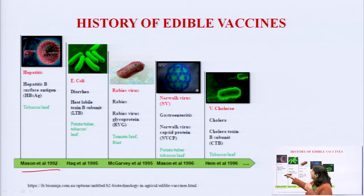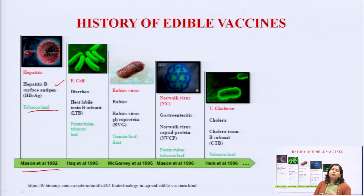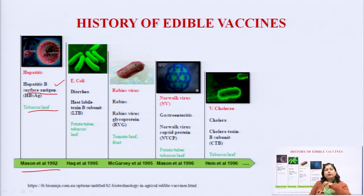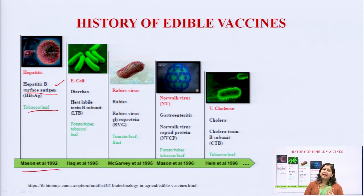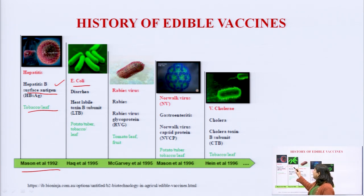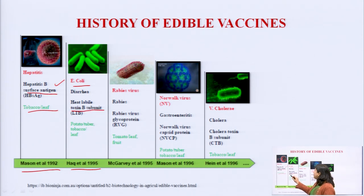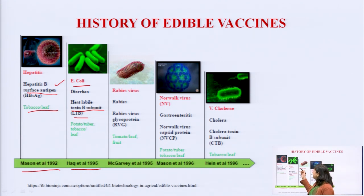There are a few important developments. Mason in 1992 developed the hepatitis B vaccine in tobacco leaf - he was able to induce the hepatitis B surface antigen protein on the tobacco leaf, so a person eating that tobacco leaf gets the hepatitis B protein inside and it acts as a hepatitis vaccine. Then Huck et al. in 1995 used the toxin B subunit, known as the LTB subunit of E. coli, and was able to transfer that unit inside the potato tuber as well as tobacco leaf.